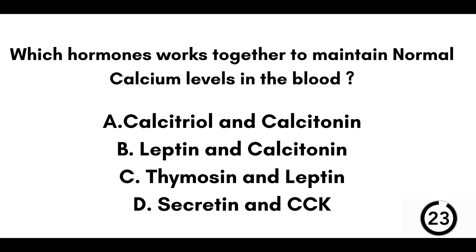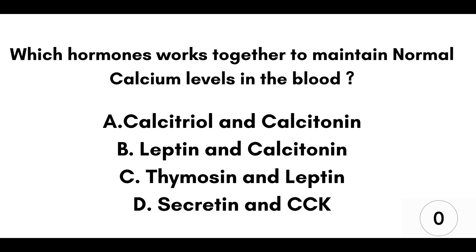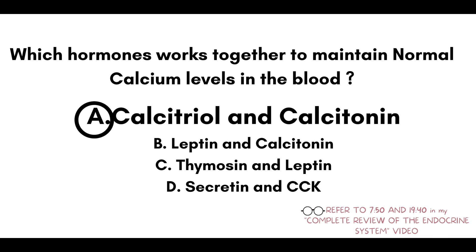Question twenty: which hormones work together to maintain normal calcium levels in the blood? A) Calcitriol and calcitonin. B) Leptin and calcitonin. C) Thymocin and leptin. Or D) Secretin and CCK. Our answer here is A, calcitriol and calcitonin.